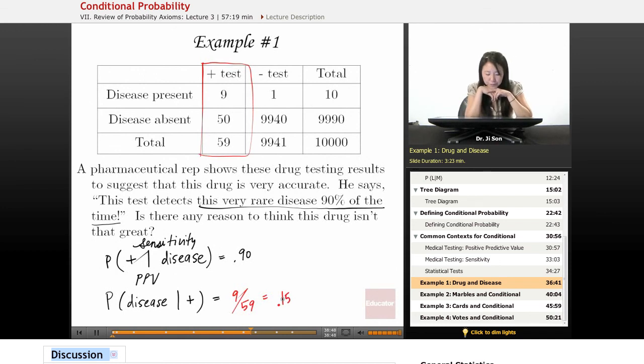So 15% of the time, when you get a positive result, you have the disease. That means 85% of the time, when you get a positive result, you don't have the disease, right?